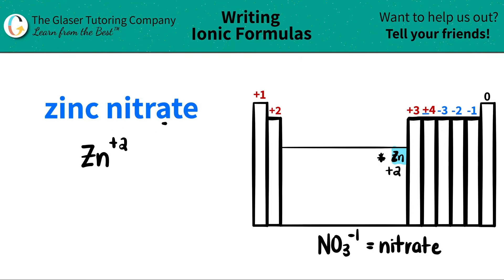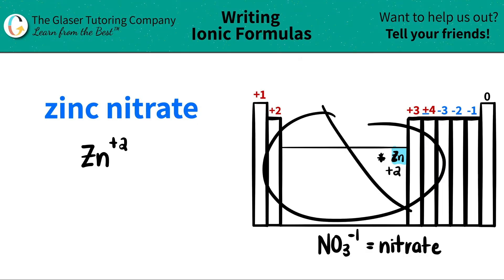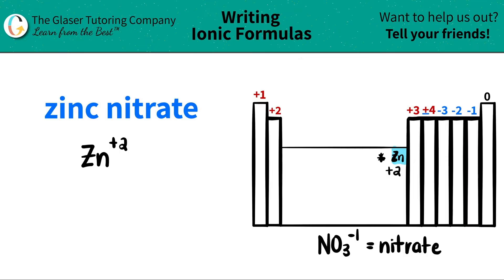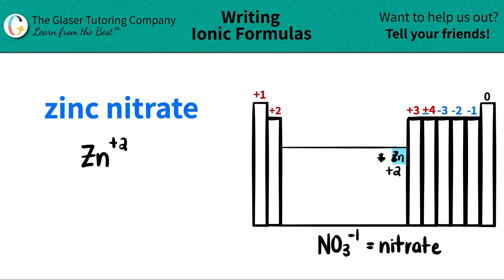Now I see that I have nitrate. There's an ATE ending, and all ATE endings mean that it's a polyatomic ion. Polyatomic ions are never going to be on the periodic table, so just memorize it — do whatever you have to do: flashcards, write it down. Just memorize that nitrate is always NO3 with a negative one charge.